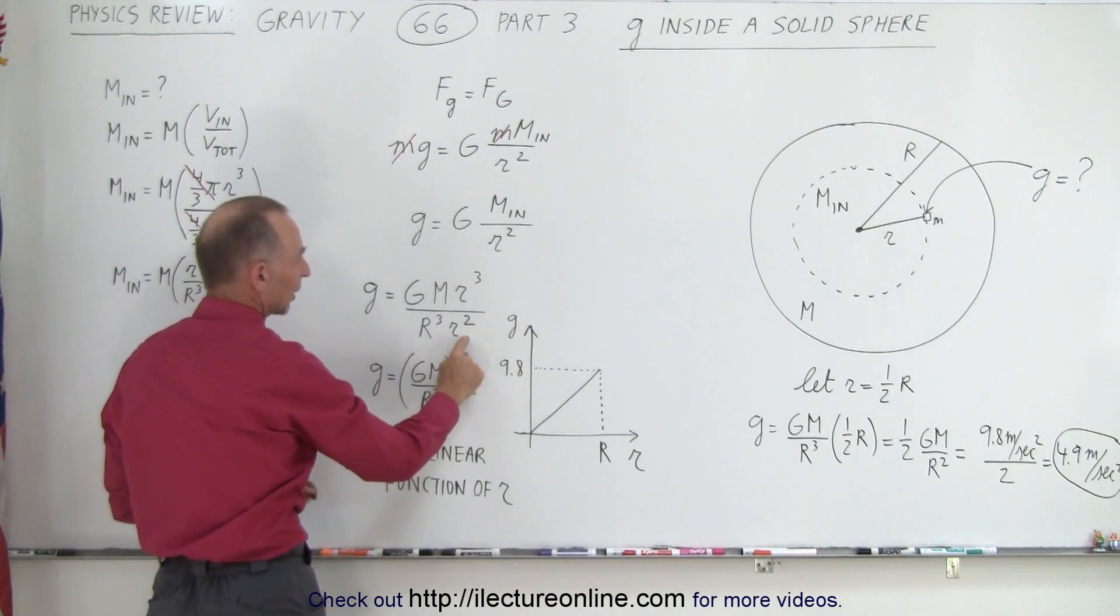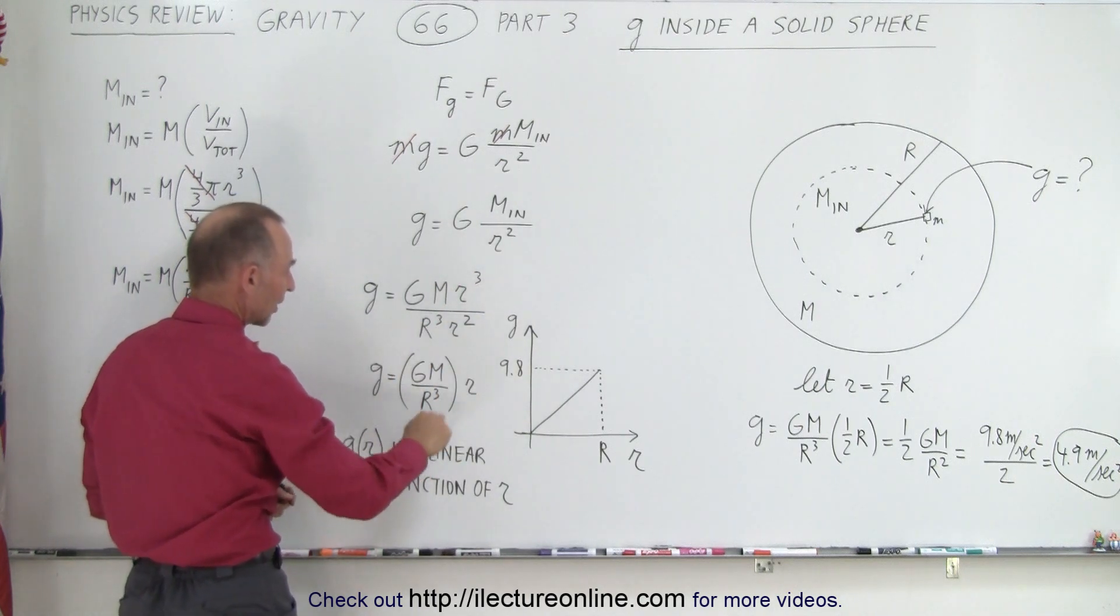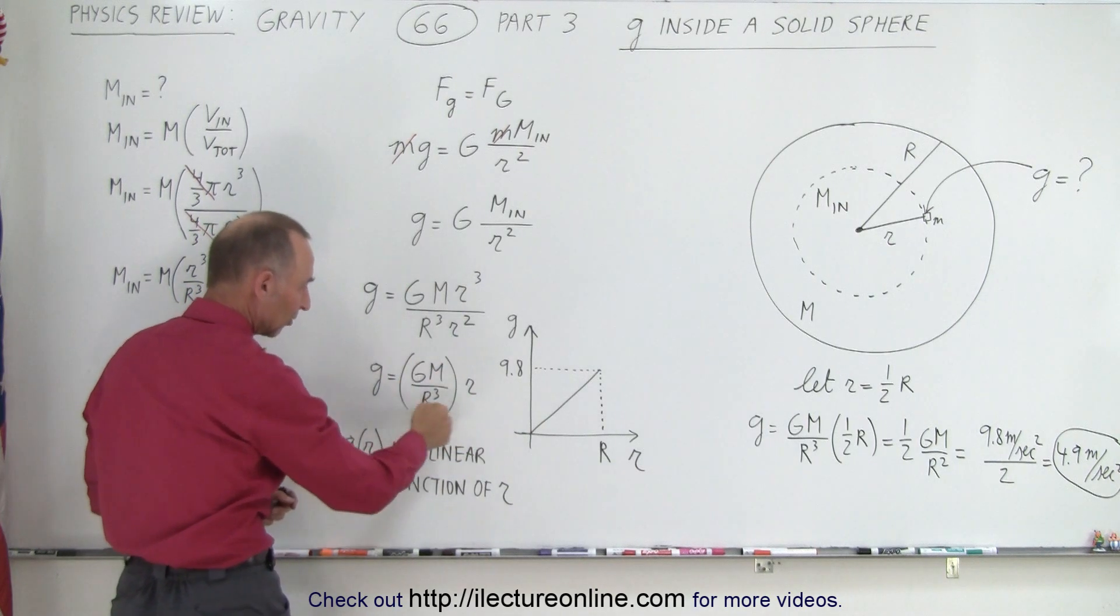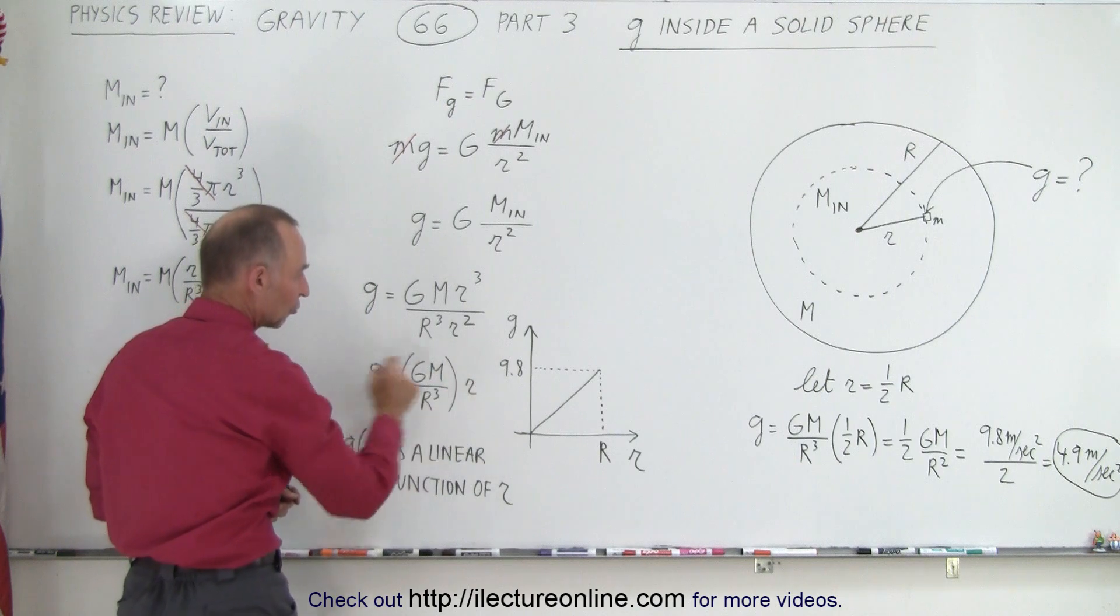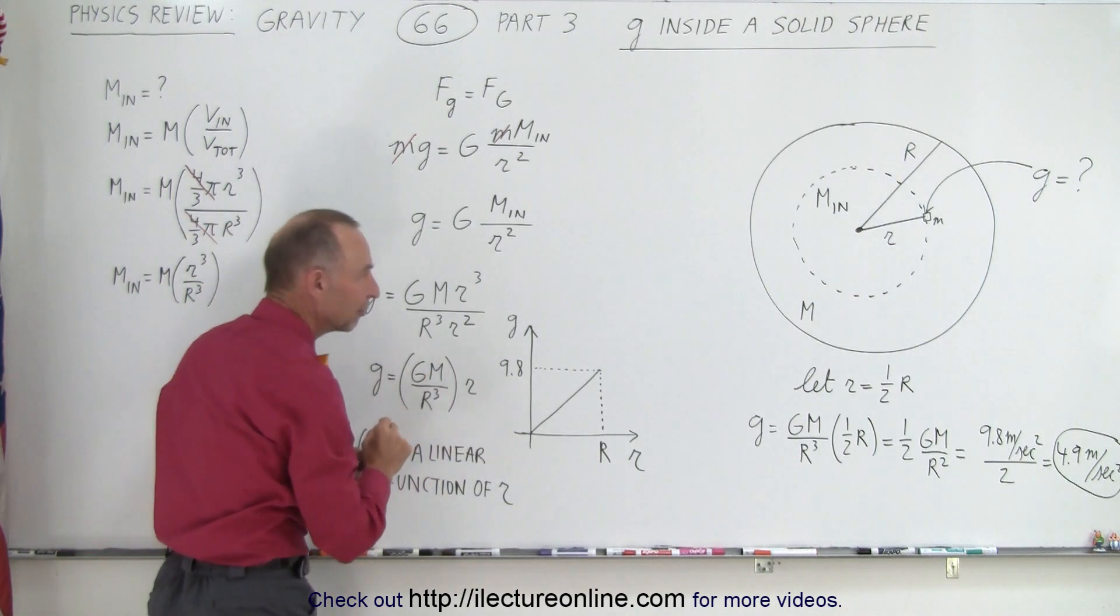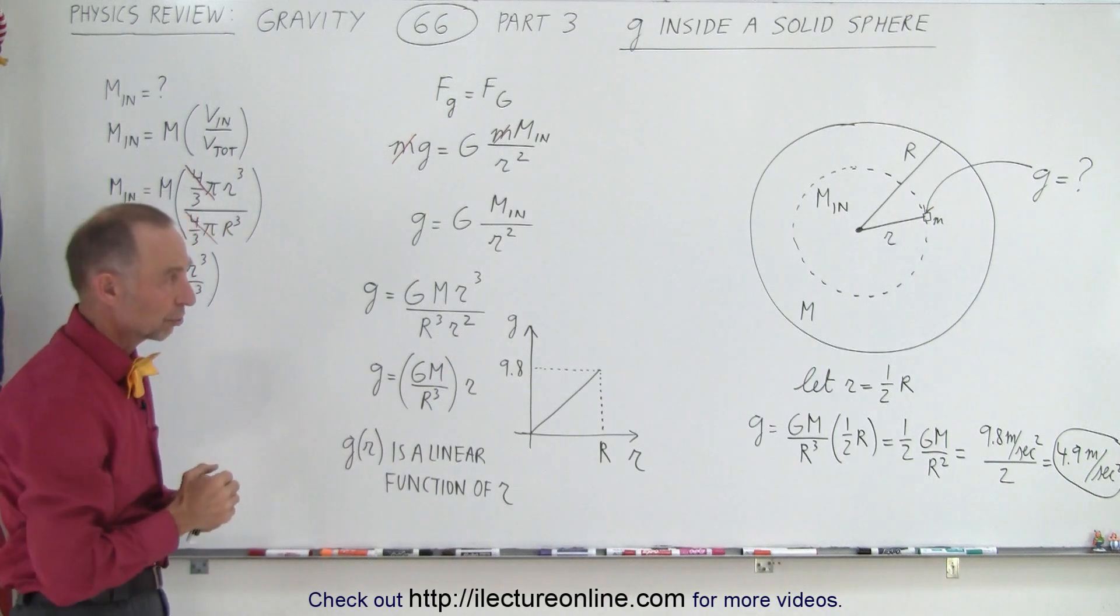And we still have to divide by little r squared. When we solve that, we get g equals GM over R cubed times r. Now, notice that this is a constant, and this is your variable, so we end up with g being a linear function of the variable r.